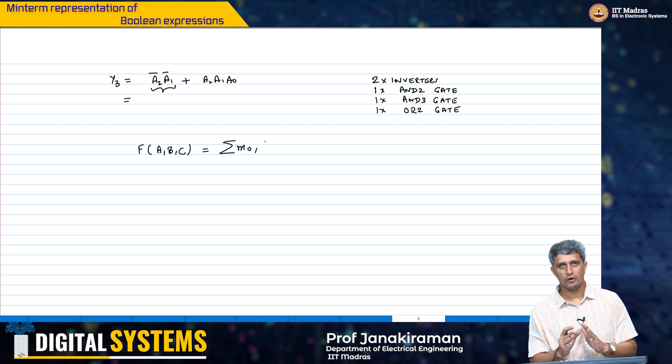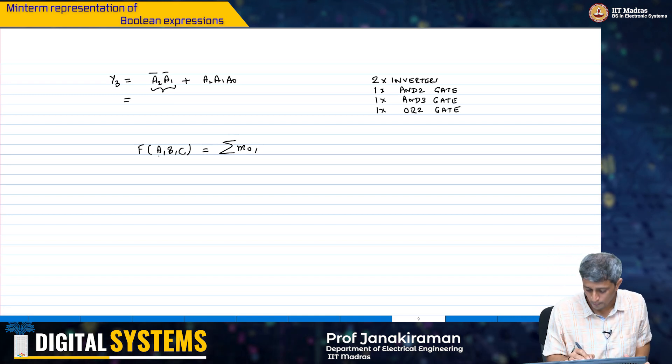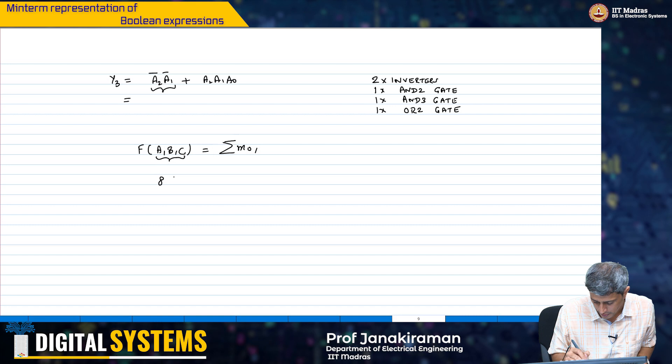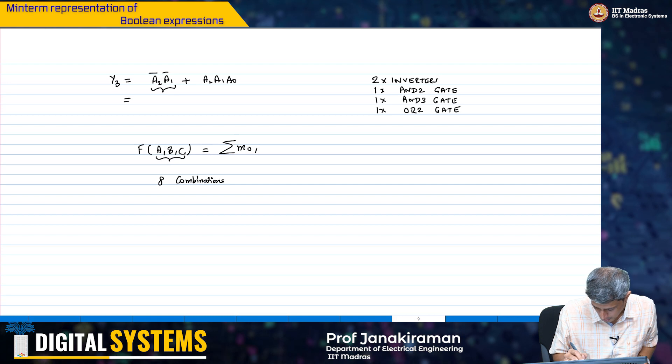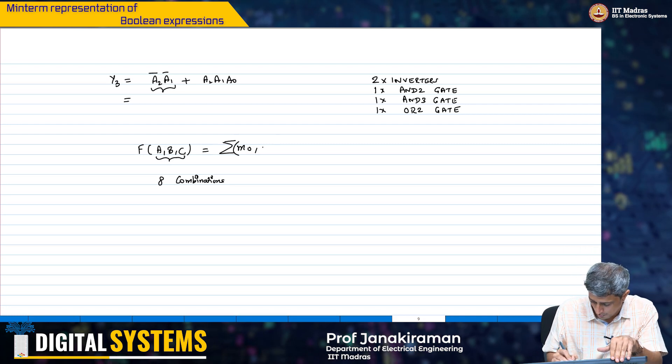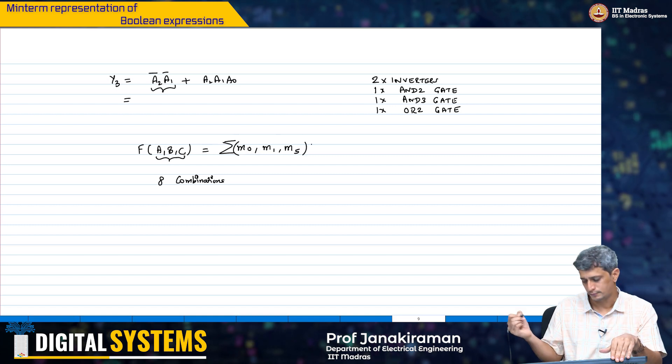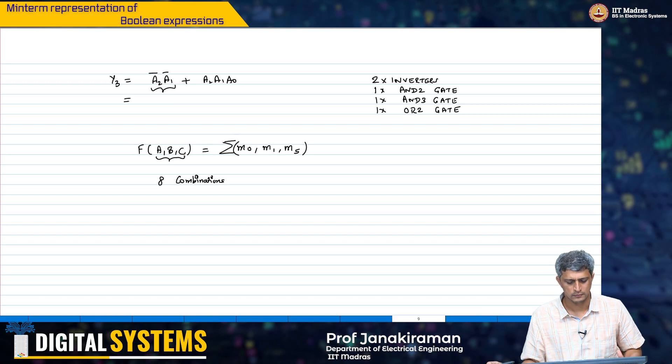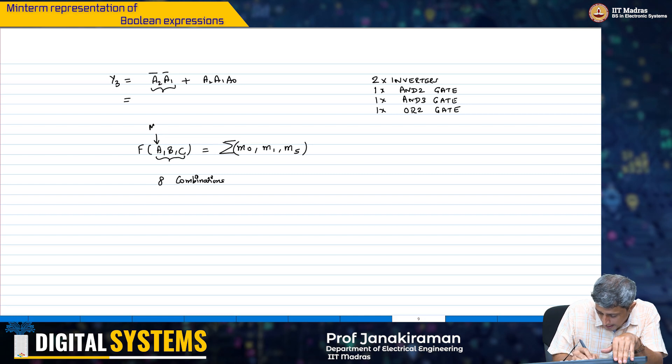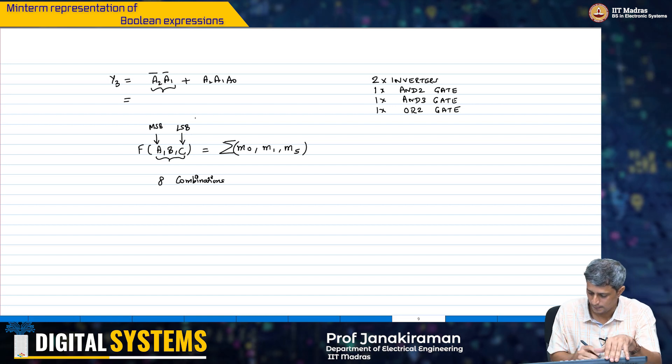So, by the way, before we even get into this, it is important to know that 3 inputs means there are 8 combinations, 8 combinations here. And therefore, I am going to say M0, M1, M5. Some 3 combinations. So, what does this mean? We are going to assume that this is the MSB and this is the LSB.